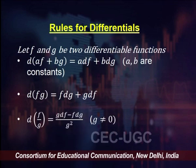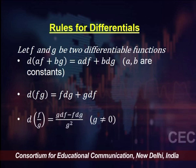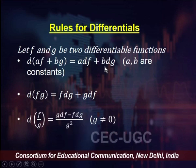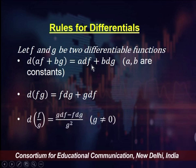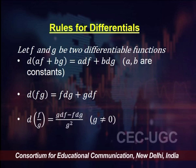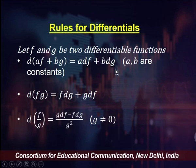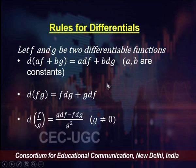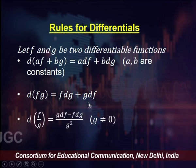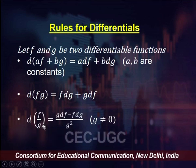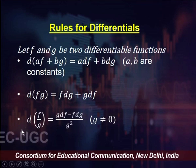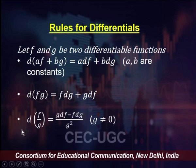Let us look at some rules for differentials. Suppose f and g are two differentiable functions; then d of (af plus bg) will be given by a times df plus b times dg, where a and b are constants. Similarly, d of (f times g) equals f times dg plus g times df, applying the product rule. Finally, d of (f divided by g) equals g times df minus f times dg, all divided by g squared, assuming g is not equal to zero.